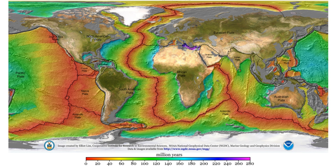In the highly conductive liquid iron of the outer core, magnetic fields are generated by electric currents through electromagnetic induction. Alfvén waves are magnetohydrodynamic waves in the magnetosphere or the Earth's core.